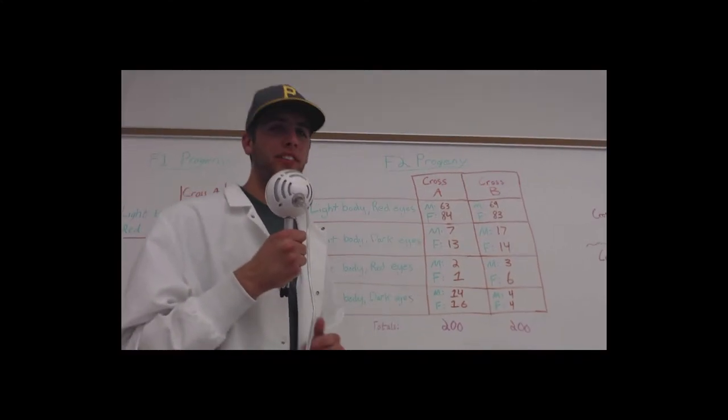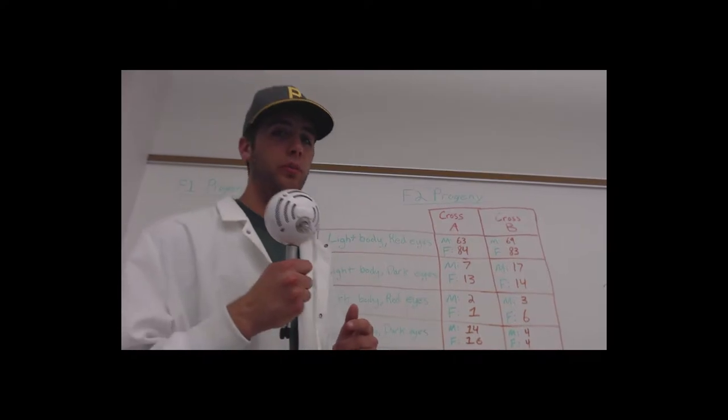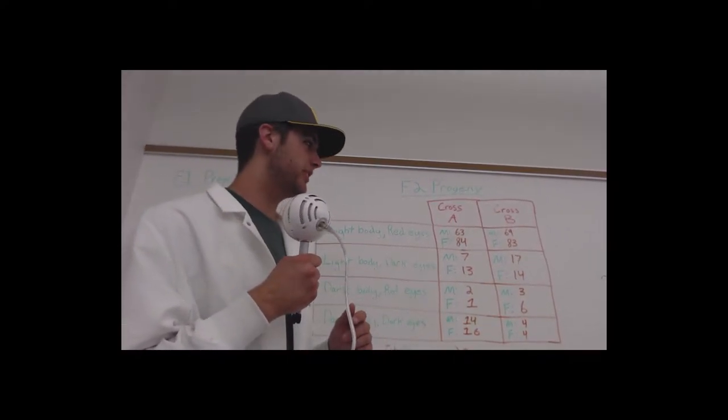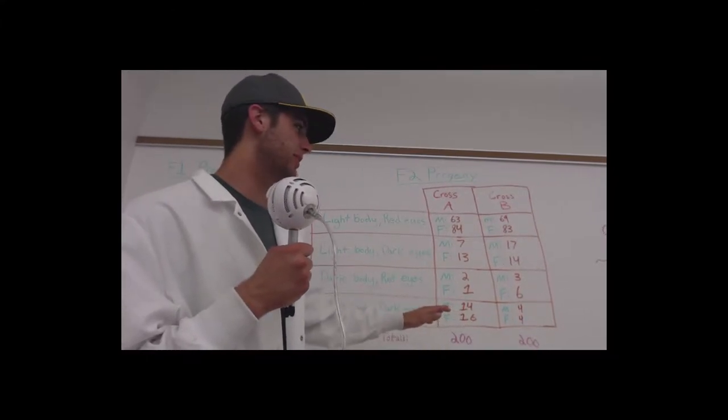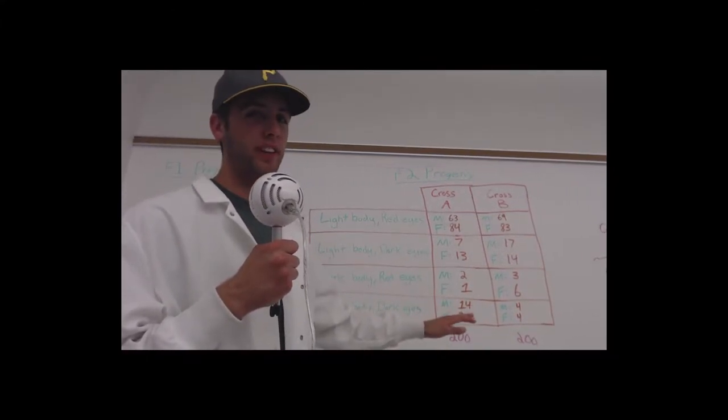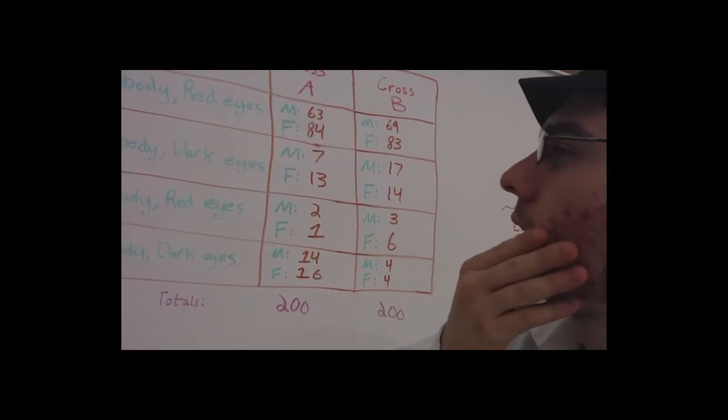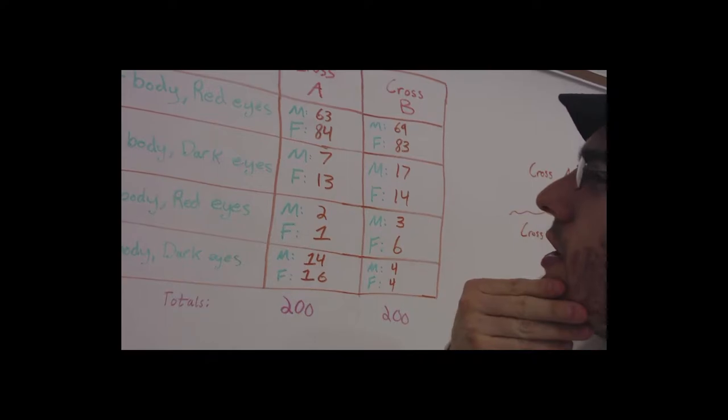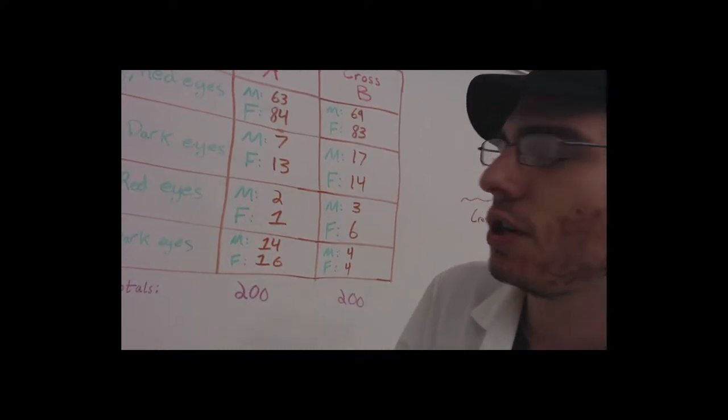We should have seen a nine to three to three to one ratio, but that is not what we observed. So clearly something is up and we gotta get to the bottom of it. That's so weird! So how'd you guys figure it out? How'd you figure out the ratios?